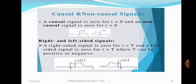Signals may be classified as continuous and discrete time signal, periodic and aperiodic signal, even and odd signal, causal and non-causal signal, energy signal and power signal, and so on. Today we are going to discuss about causal and non-causal signal.